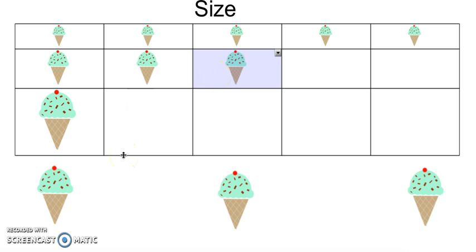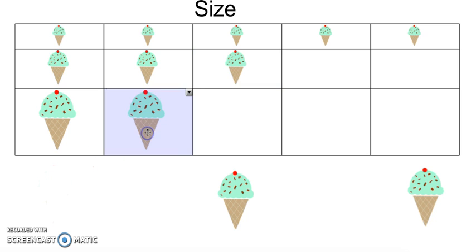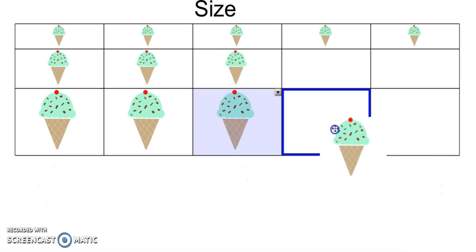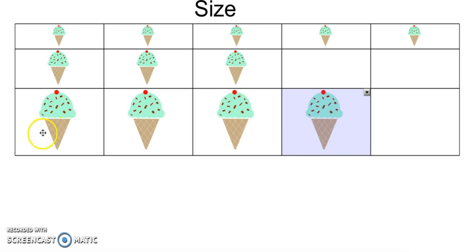Now I'm going to group my large ice cream cones. One, two, three. I have three large ice cream cones. We grouped these ice cream cones by size.